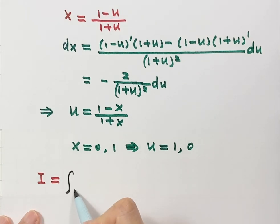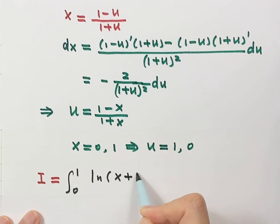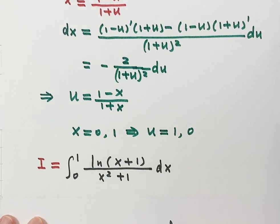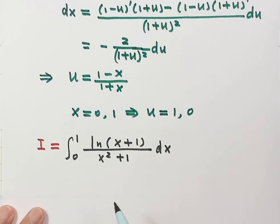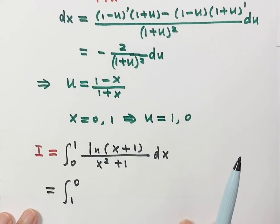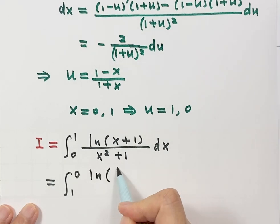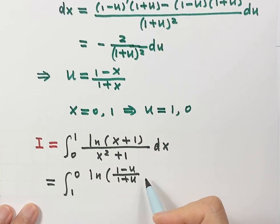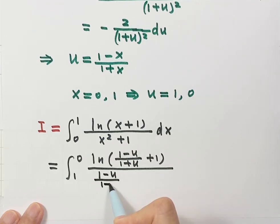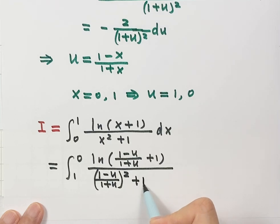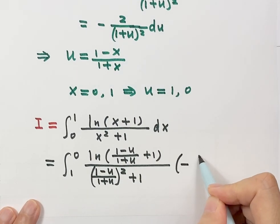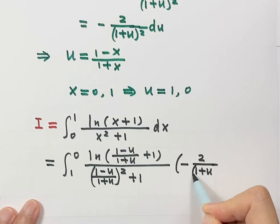So I equals the integral from 0 to 1 of log(x+1)/(x²+1) dx. After substitution, with limits from 1 to 0, we get log((1-u)/(1+u) + 1) in the numerator, ((1-u)/(1+u))²+1 in the denominator, and dx = -2/(1+u)² du.